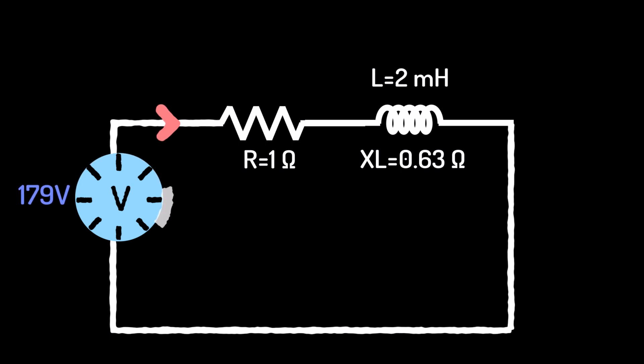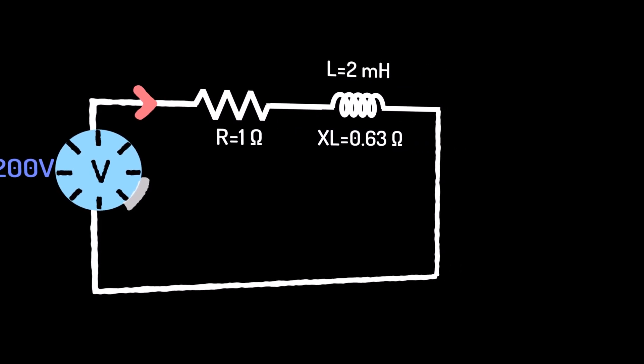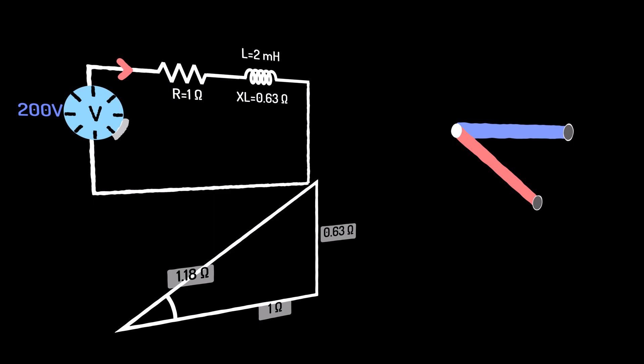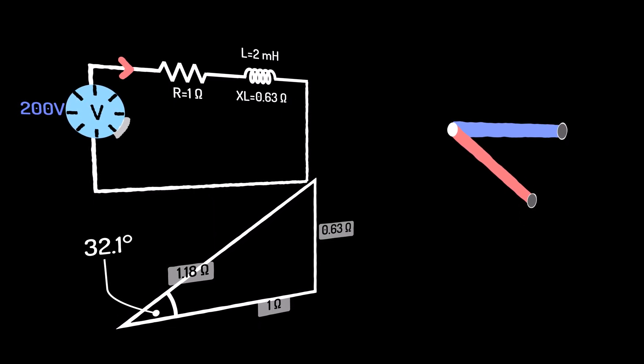Remember, impedance itself is not a phasor, but it is a complex quantity, and its amplitude and phase will determine the relationship between the voltage and current phasors.